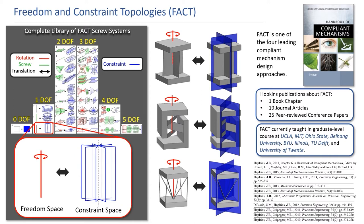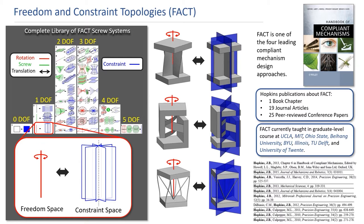As an example, consider this freedom space that consists of a single rotation. Its constraint space is every plane that intersects the rotation line's axis. Thus, any compliant mechanism that achieves a single rotation — like the three mechanisms shown here — will do so because their flexible constraints lie on the intersecting planes of the rotation line's constraint space. Since FACT's library of geometric shapes is comprehensive, FACT embodies the complete design space of all deformable systems. I've created the rules for rapidly combing through the most promising branches of this complete design space to enable designers to rapidly identify the most promising compliant solutions.